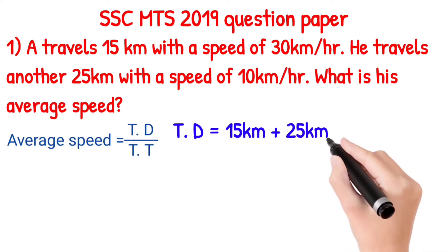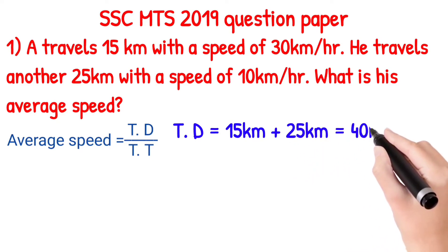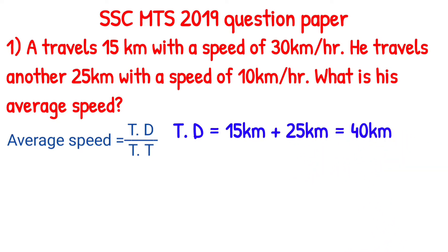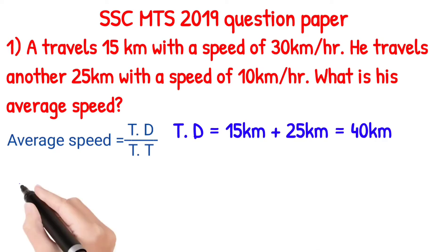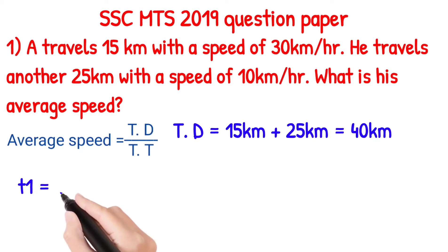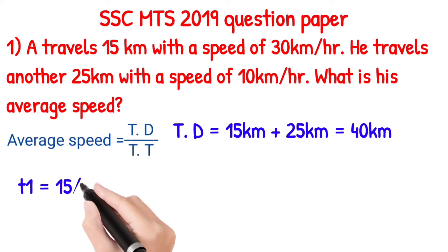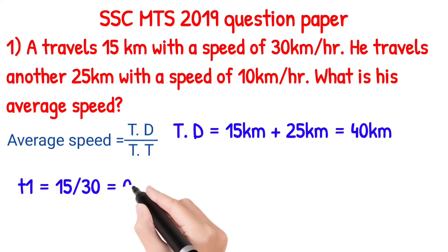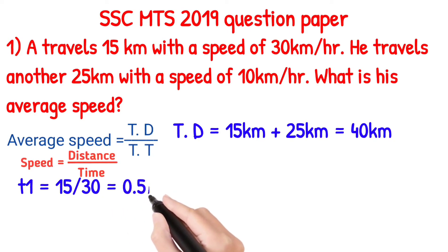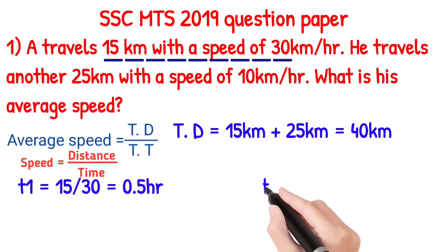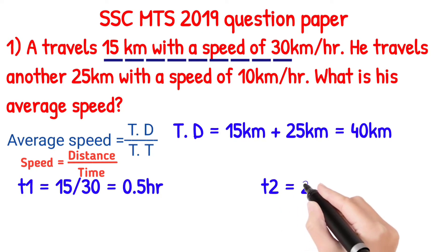Total distance is all the distance covered. First distance is 15 km, second distance is 25 km. If we add the two, we get 40 km. This is the total distance. Now, total time — time is equal to distance divided by speed. So, 15 divided by 30 is 0.5 hours.